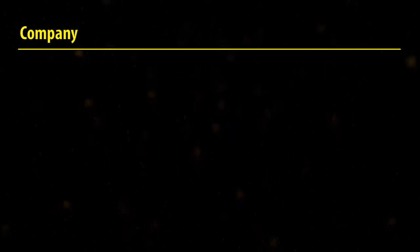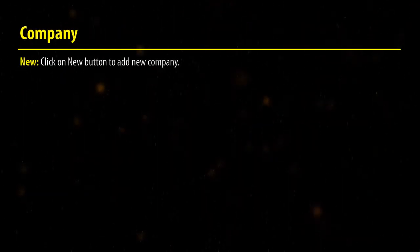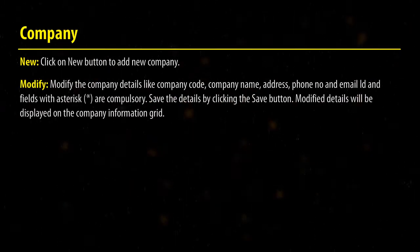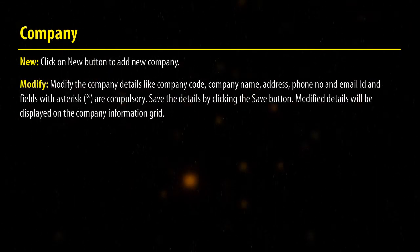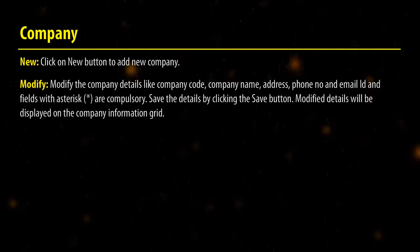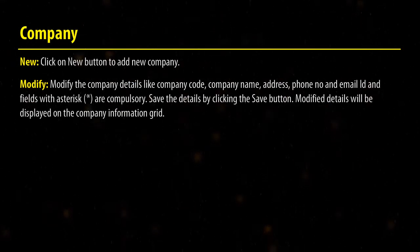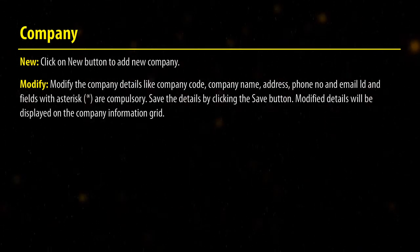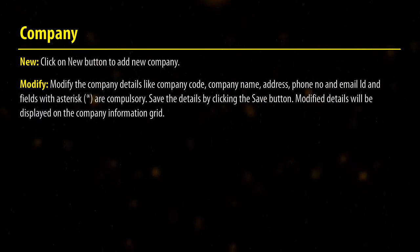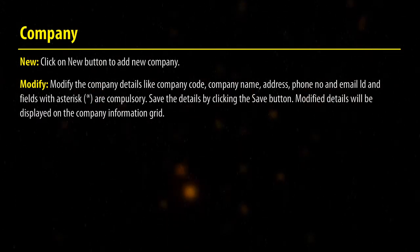Click on the New button to add a new company. Modify the company details like company code, company name, address, phone number, and email ID. Fields with the asterisk are compulsory. Save the details by clicking the Save button.